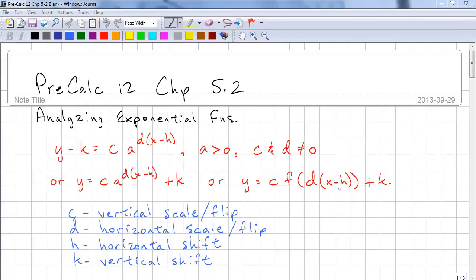This is Pre-Calc 12, Chapter 5.2. We're going to analyze exponential functions. The standard form is y minus k equals c times a to the power of d times x minus h in brackets, where a is greater than 0 and c and d are not equal to 0.